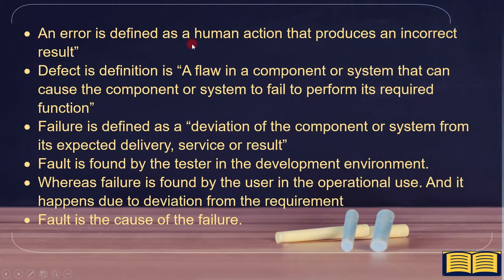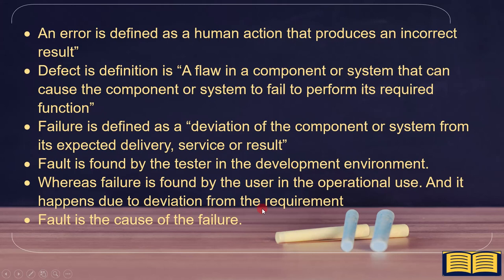To summarize: an error is defined as a human action that produces an incorrect result. The definition for defect is a flaw in a component or system that can cause the component or system to fail performing its required function. Failure is defined as a deviation of the component or system from its expected delivery, service, or result. The fault is found by the tester in the development environment, whereas failure is found by the user in operational use and happens due to deviation from the requirement. The fault is the cause of the failure.